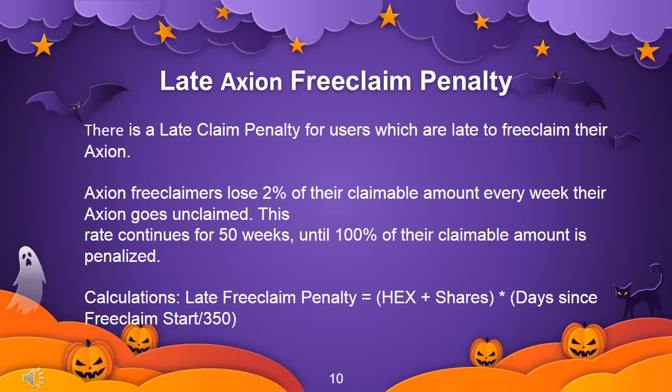Late Axion free claim penalty: there is a late claim penalty for users who are late to free claim their Axion. Free claimers lose 2% of their claimable amount every week their Axion goes unclaimed. This rate continues for 50 weeks until 100% of their claimable amount is penalized. Calculation: late free claim penalty = HEX shares × (days since free claim start / 350).